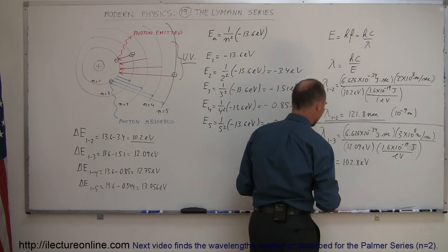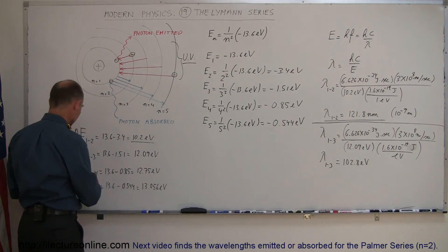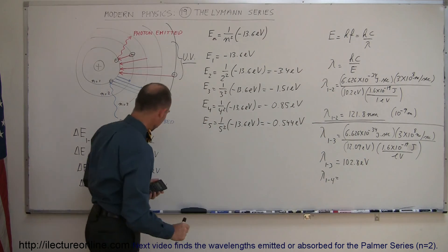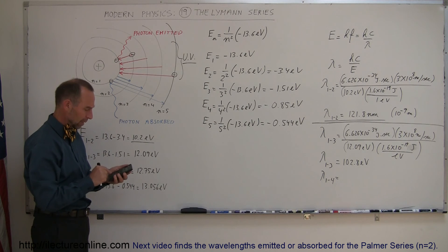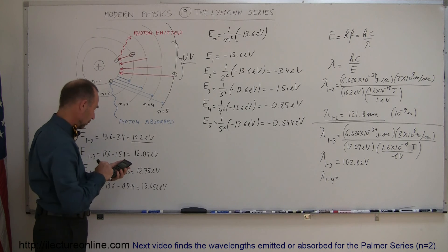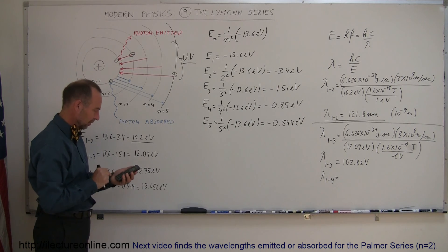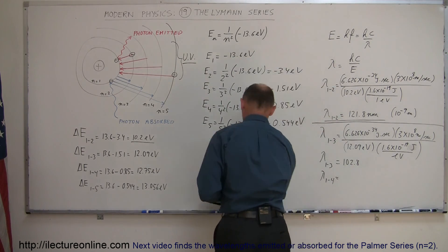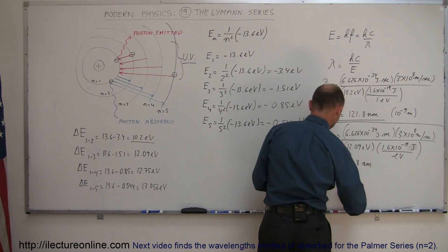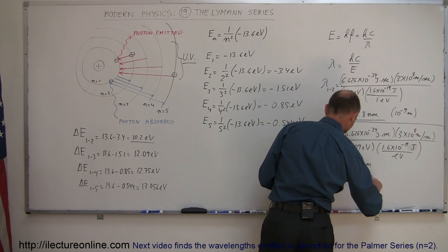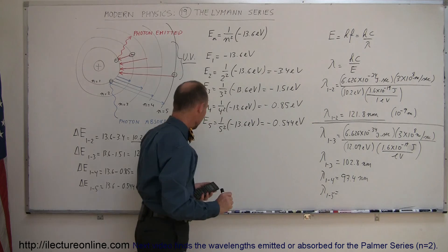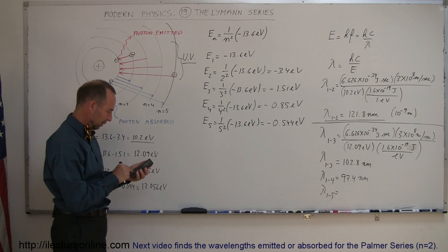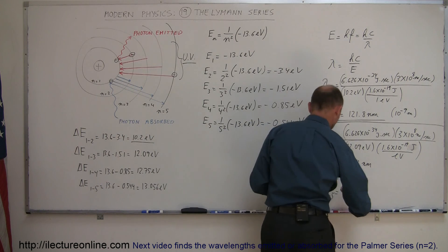For the jump from orbit 1 to orbit 4, lambda 1 to 4, we substitute 12.75 electron volts into the formula and get 97.4 nanometers. And finally, for the jump from level 1 to level 5, plugging in 13.056 electron volts gives us 95.2 nanometers.